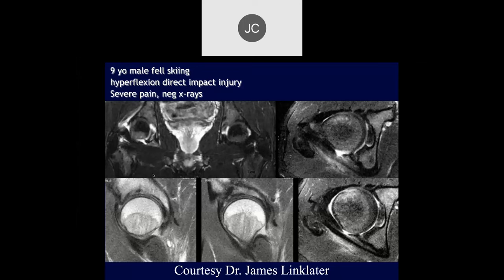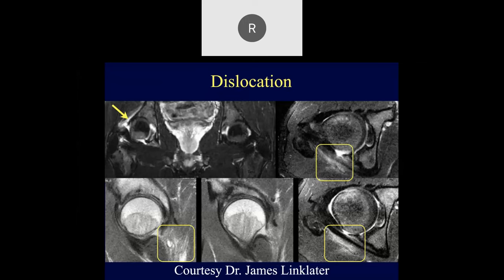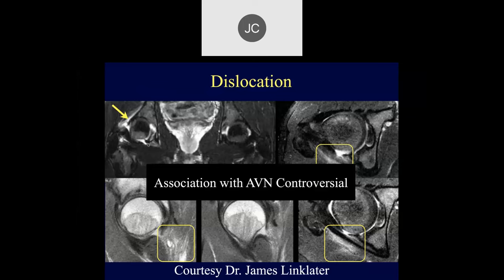Nine-year-old male who fell skiing, hyperflexion direct impact injury, severe pain, negative x-rays. Looking at the ischiofemoral ligament, there's some increased signal, maybe some discontinuity, and some adjacent edema. This patient was dislocated and had a tear of the ligament from the dislocation. There's debate about whether these dislocations are highly associated with AVN, but some may be associated with femoral head fractures not well seen on plain radiographs but visible on MR.